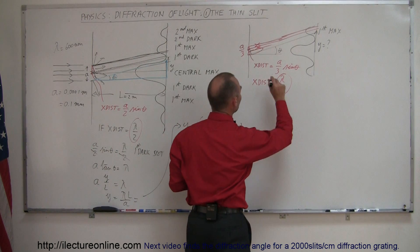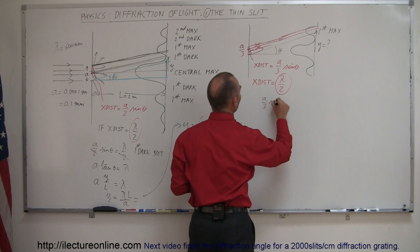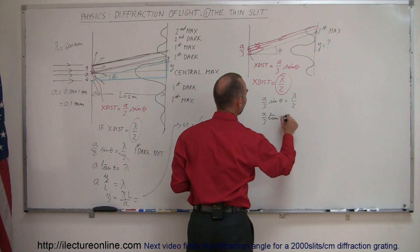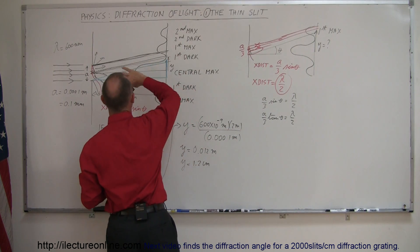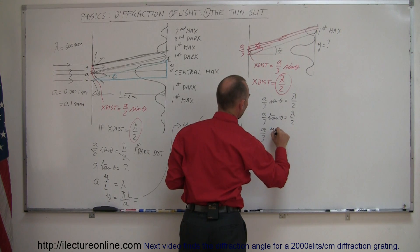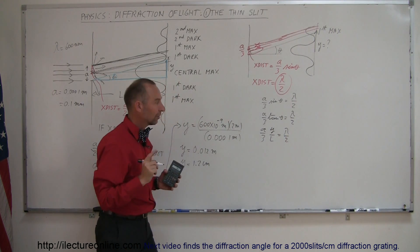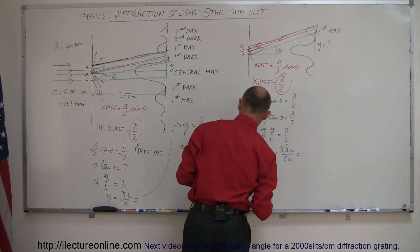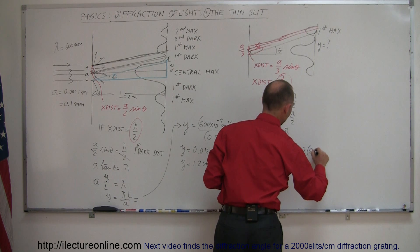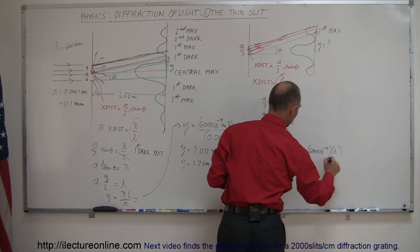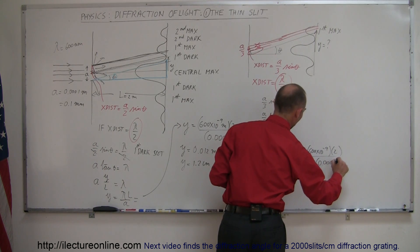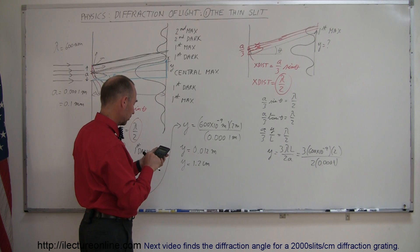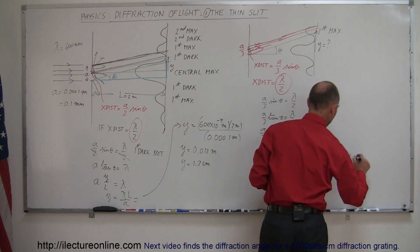Setting the condition: a over 3 sine theta equals lambda over 2, and writing sine theta as the tangent gives a over 3 times y over L equals lambda over 2. Solving for y gives y equals 3 lambda L over 2a. Plugging in the same numbers — 3 times 600 times 10 to the minus 9 times 2 meters, divided by 2 times 0.0001 — we get 1.8 centimeters.